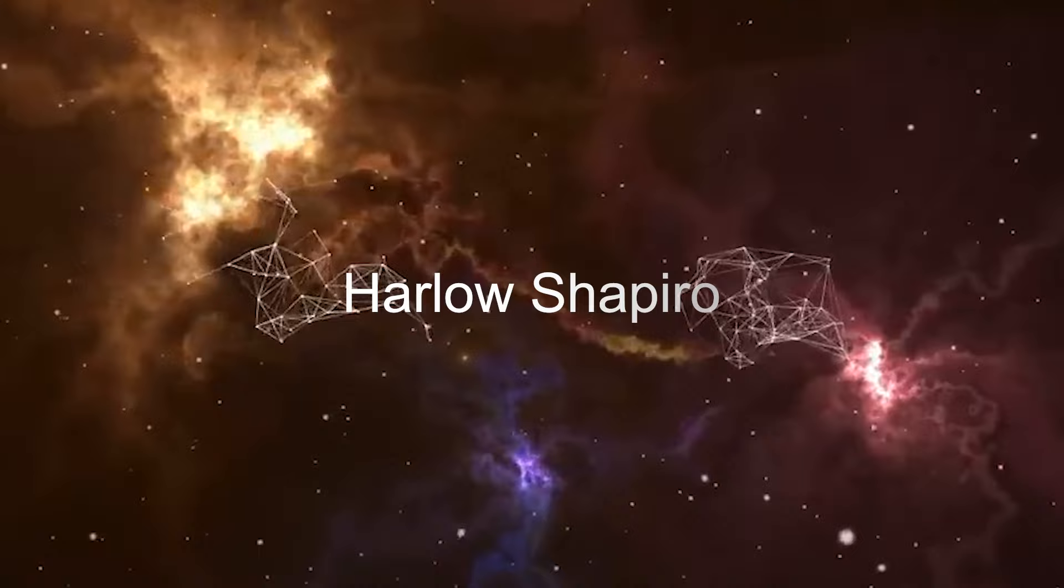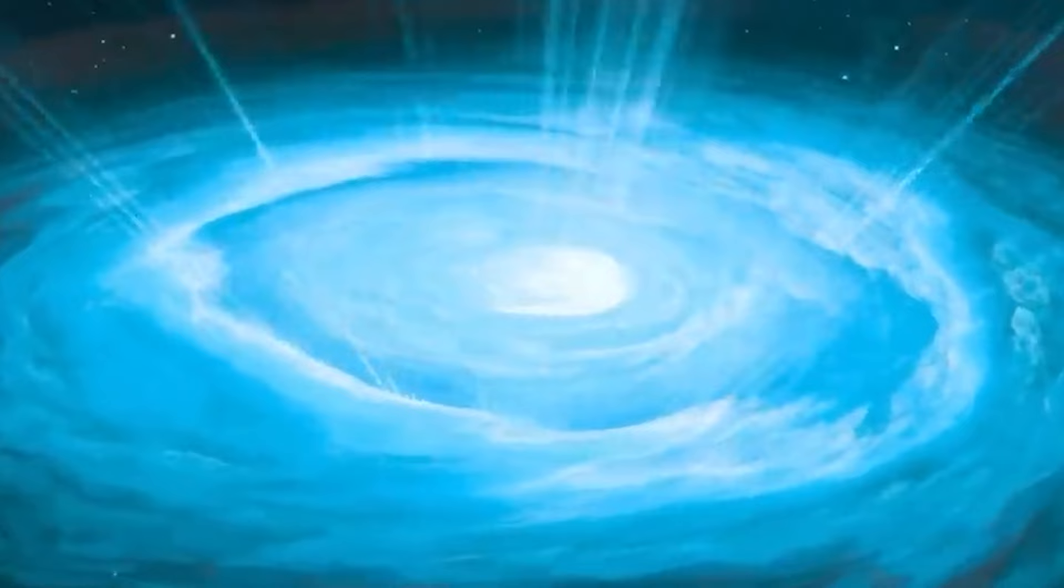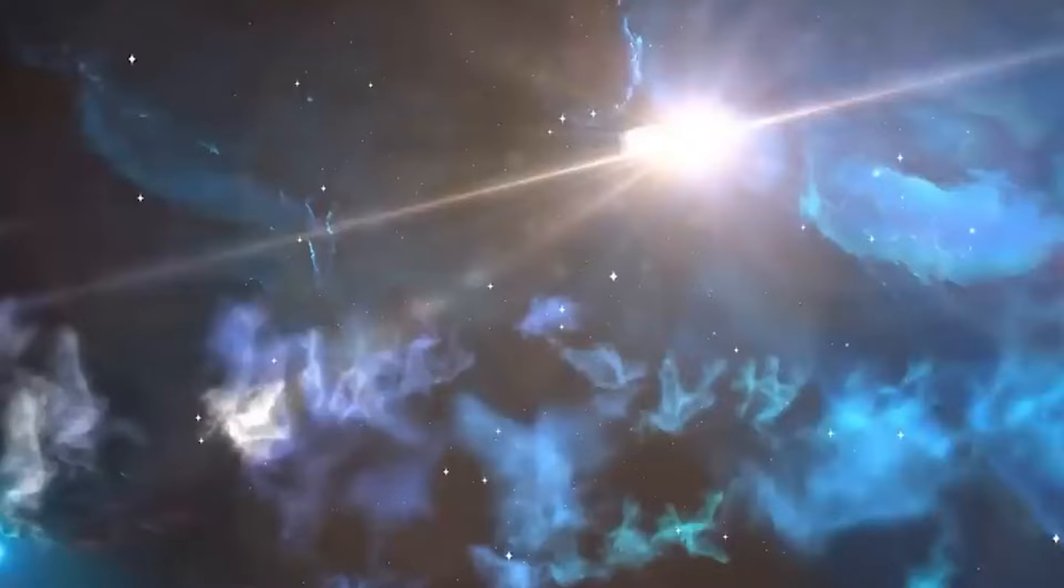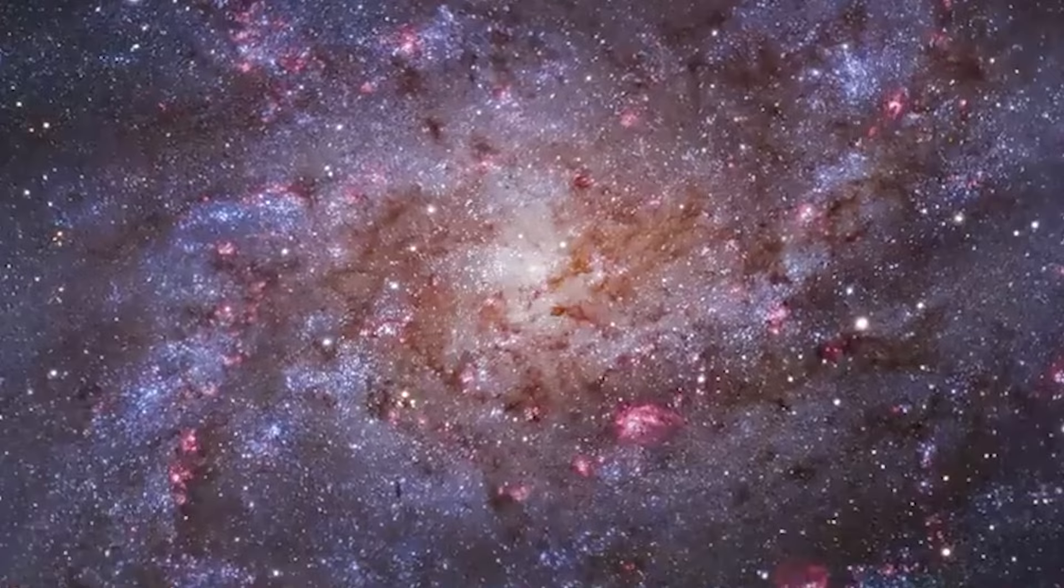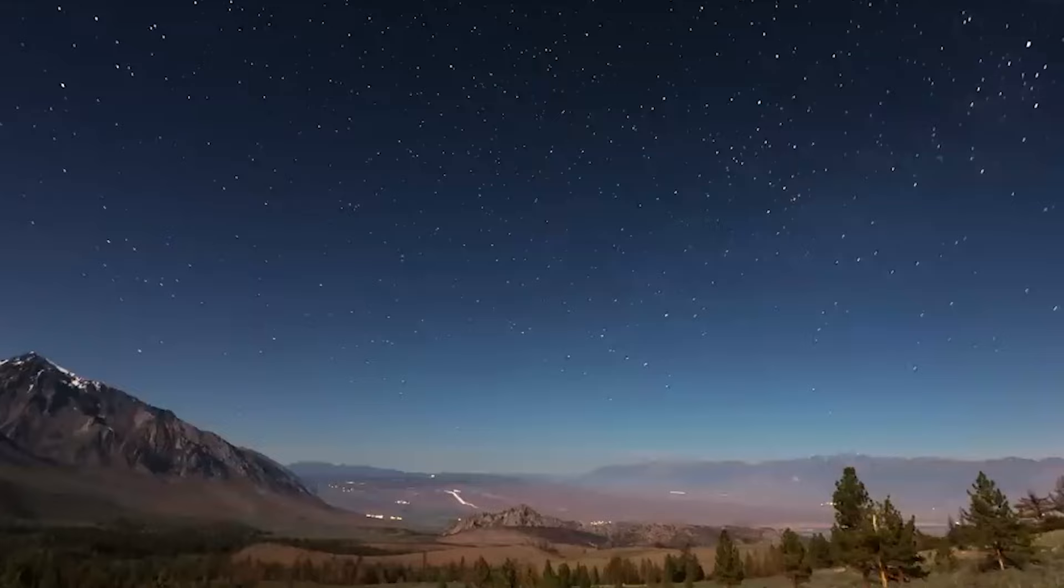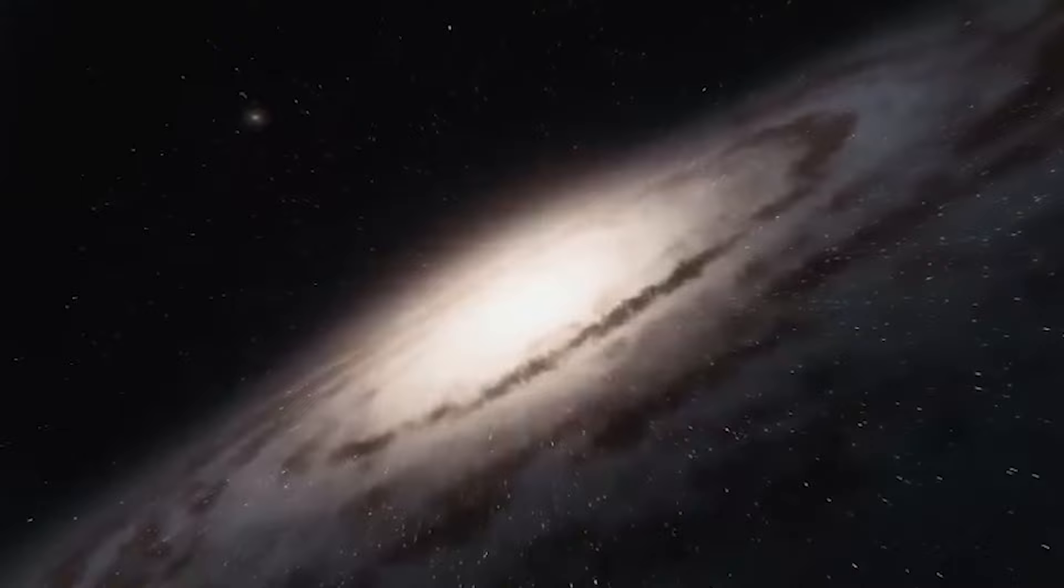The year is 1920, and astronomers have just discovered that Andromeda, that stunning galaxy in the night sky, is actually a large, flattened disk of stars similar to the Milky Way. But a curious question emerged: amidst this celestial sea, where exactly do we reside within our galaxy's vast embrace? Here's where the enigmatic Harlow Shapley enters the cosmic scene.